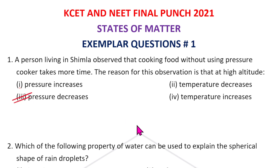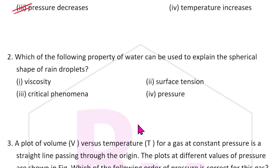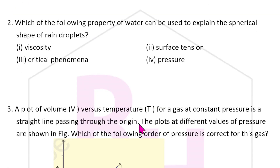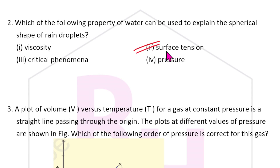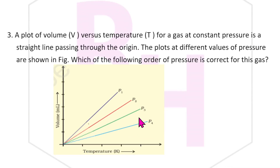Question 2: Which property of water can be used to explain the spherical shape of a raindrop? Surface tension should be the answer in this particular case.